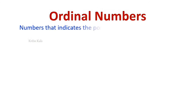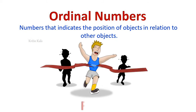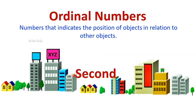Ordinal numbers are the numbers that indicate the position of an object in relation to other objects. For example, Adi came first in the race, means the position of Adi was first in the race. Let's see another example: I stay at the second floor of XYZ apartment. That means my house is located on the second floor of the apartment.